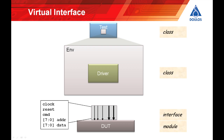In a UVM verification environment, the component that wiggles the pins on the DUT interface is the UVM driver. We're going to need to find a way of accessing the contents of that interface from our UVM driver, which is a class within our class-based verification environment. The usual way to access the contents of a SystemVerilog interface in UVM is to use a virtual interface. A virtual interface is effectively a SystemVerilog variable that contains a reference to an actual interface — it's not technically a variable in SystemVerilog, but in effect it acts like one.